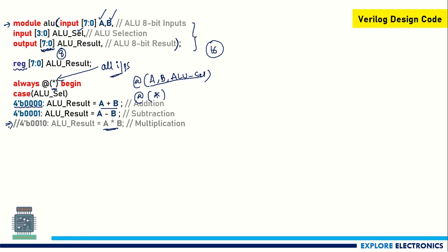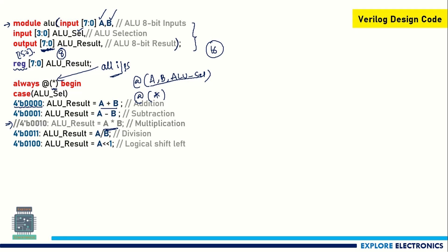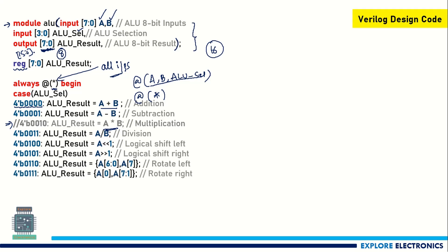Multiplication requires a 16-bit output, so an 8-bit output will not give the accurate result. If you want to perform multiplication, you need to define the output as [15:0] to support 16 bits. For rotate left, I use a concatenation operation — all bits shift left and the MSB wraps around to the LSB.